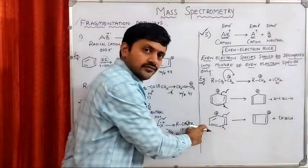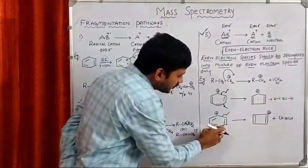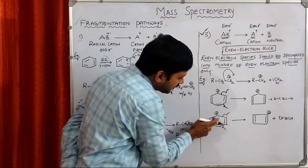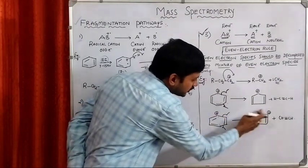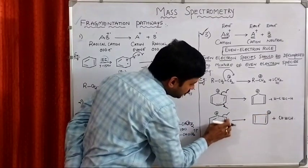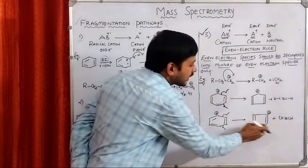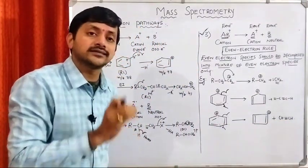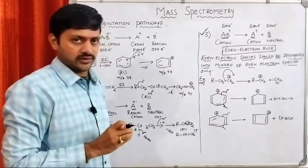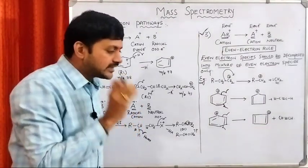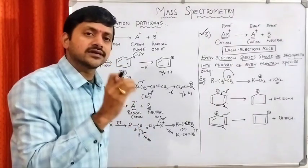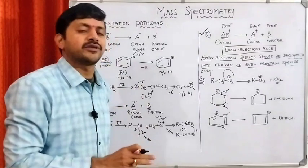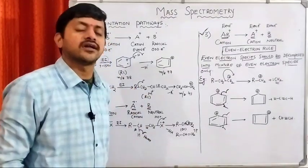In the phenyl cation case, similarly, two homolytic cleavages produce radicals. These two radicals form a single bond giving a cyclic product; these two radicals form a pi bond giving acetylene — cation plus neutral. This is the third pathway, commonly called the even electron rule, and it is very, very important. Each and every aspirant should have complete knowledge of these three pathways in order to do the fragmentation process of any kind of organic molecule.